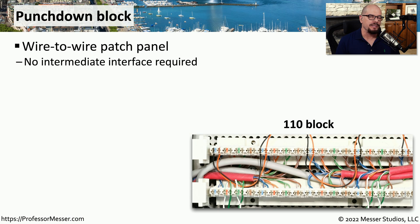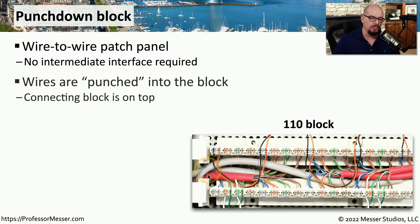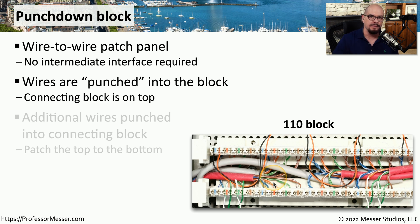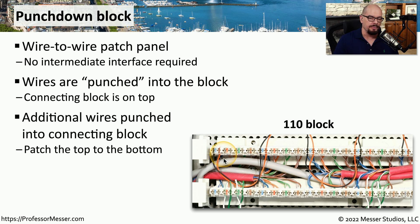If you work in a data center or a large computer room, you may have a number of punchdown blocks on the back wall used to connect users to the network. This is a wiring panel where the wires themselves are physically pushed or punched into the block itself, and there's usually a connector added on top of these wires or on the other side of the wiring block. This allows you to permanently attach these wires into a wiring block, making it much easier to manage wires in your data center.